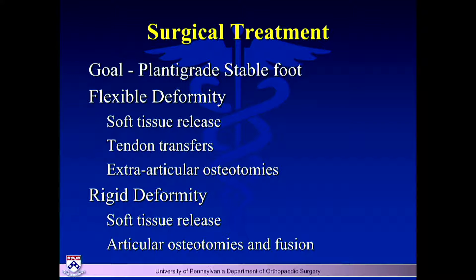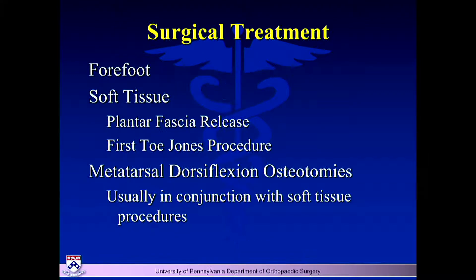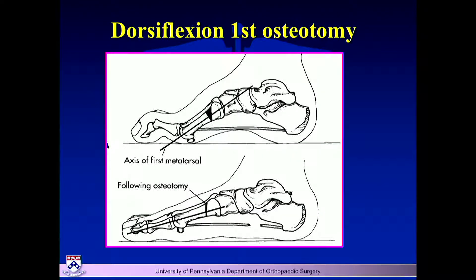If it's rigid, you'll be doing soft tissue releases plus articular osteotomies and fusions to get things stable, but you still have to think about balancing. On the forefoot, we usually start first with a plantar fascia release, because you don't know how much you have to dorsiflex the first ray until after that release. I tend to do it through the mid-substance of the plantar fascia rather than off the heel — I'm away from the nerves and avoid post-operative nerve injury.